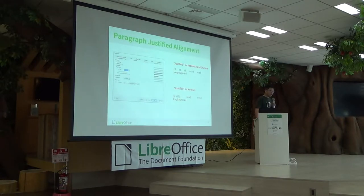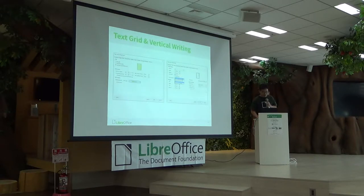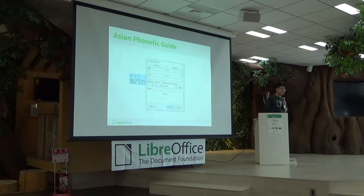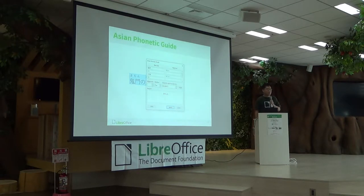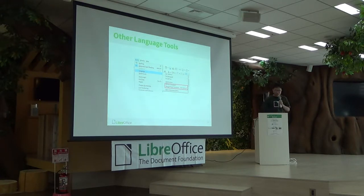We also have justified alignment rules. Japanese and Chinese users have different justification rules compared to other languages. And also in some contexts we write vertically, or in a special form of paper called a text-free paper. We also use Ruby or Asian phonetic guide to mark ideographs so that readers know how to pronounce them.